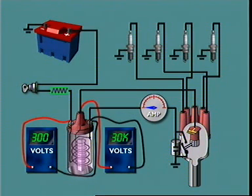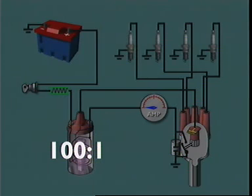The maximum value of the secondary voltage is partly determined by the ratio of the number of turns in the secondary winding to the number of turns in the primary winding, in this case 100 to 1, and by the value of the self-induced voltage in the primary winding, in this case 300 volts.